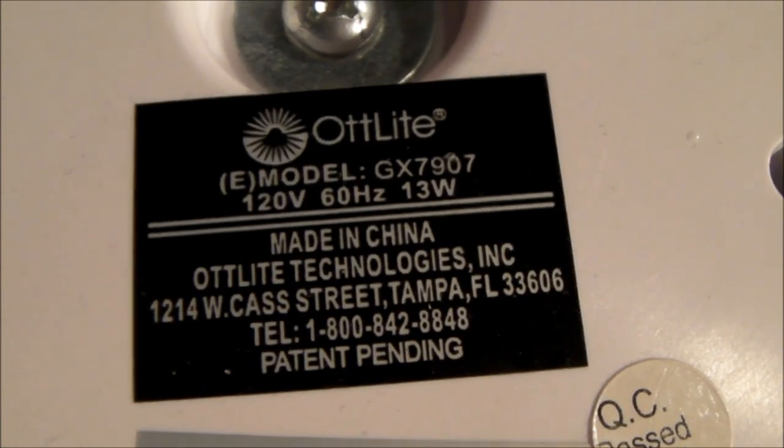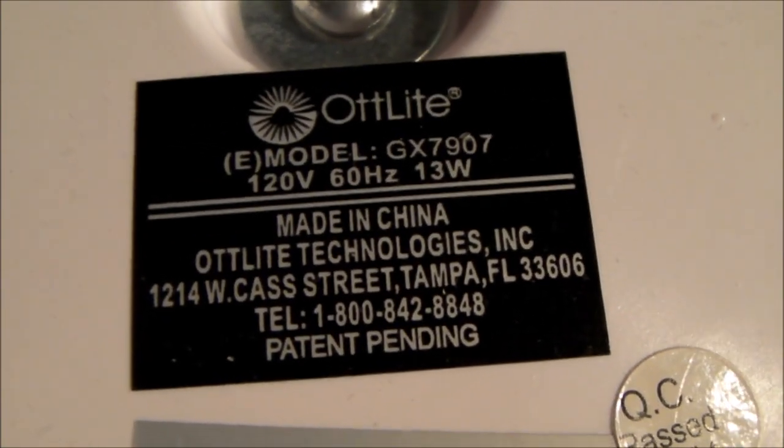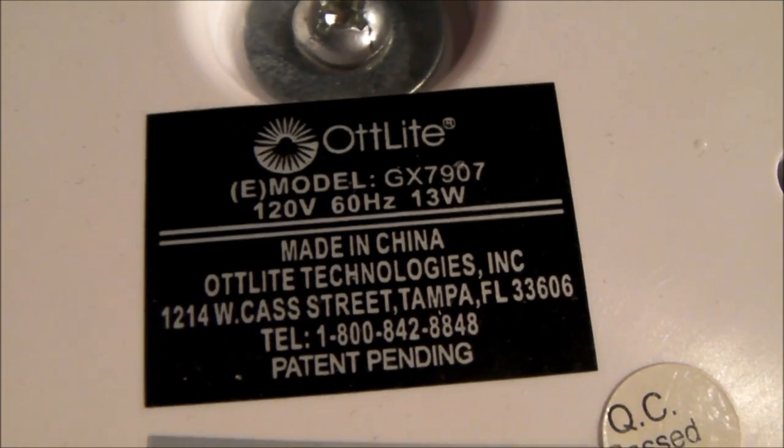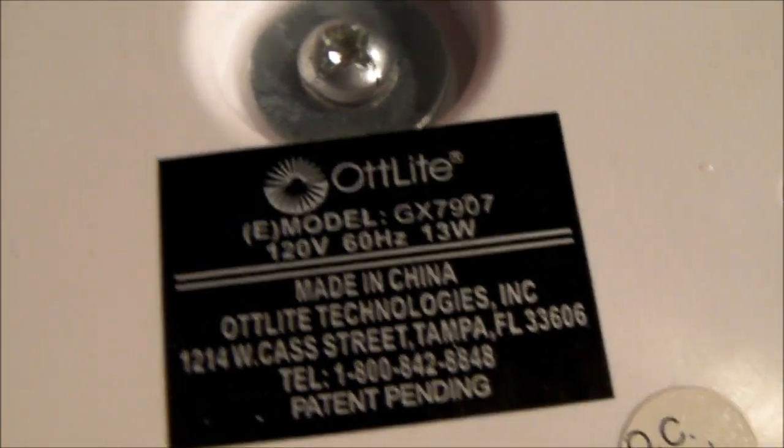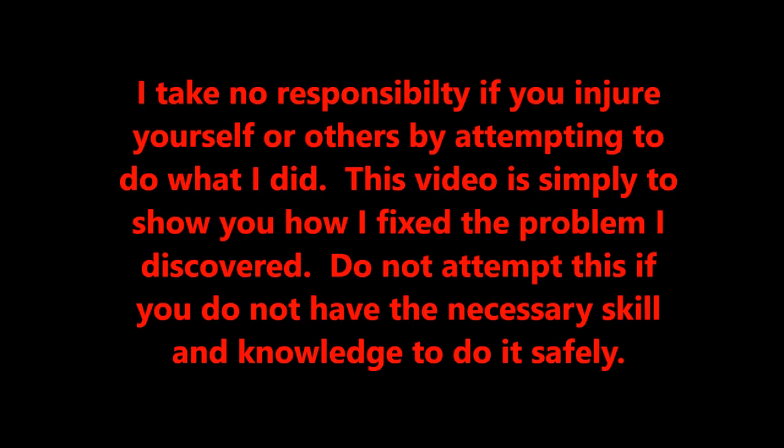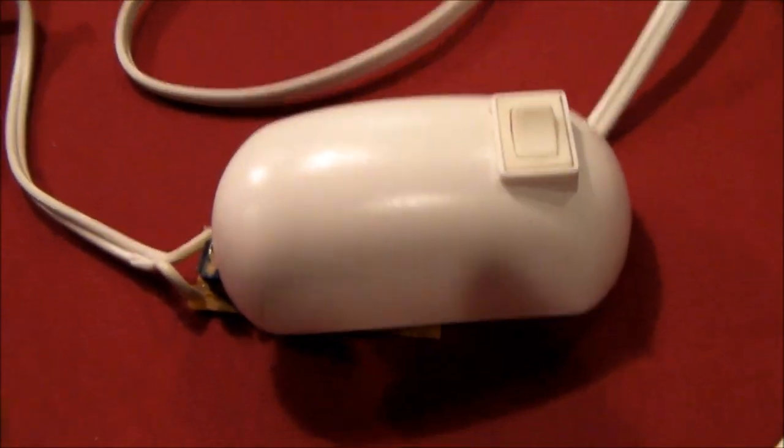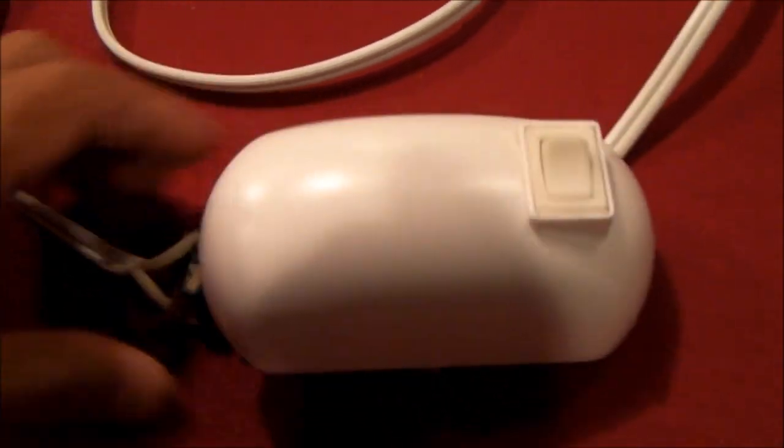Hello everybody. My uncle has this Otlite model GX7907 which is not working, so he asked me to take a look at it and see if I could fix it. Looks like he bought a new bulb for it but the new bulb doesn't work, so my suspicion is that the electronic ballast has failed.